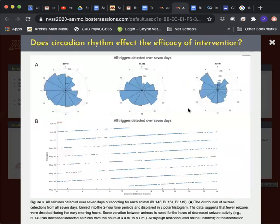The question for my work was: does circadian rhythm affect the efficacy of intervention? Looking at three animals and data collected over seven continuous days, I found that when looking at all seizures detected, there were fewer seizures occurring in the early morning hours.